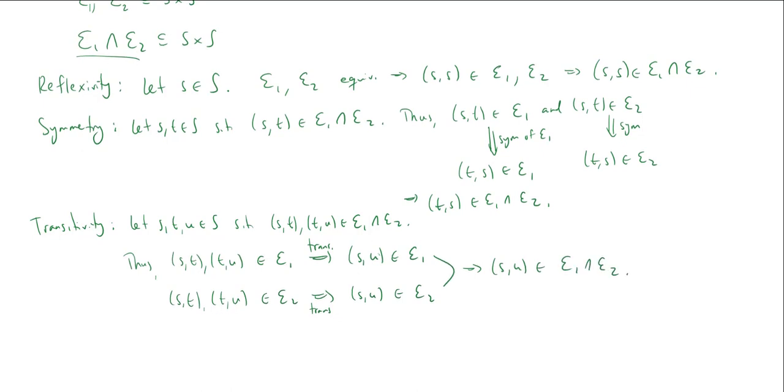And that's it. We've verified reflexivity, symmetry, and transitivity. Thus, E1 intersect E2 is an equivalence relation. That's the end of our proof. And that's the end of quiz two. We will see you next time.